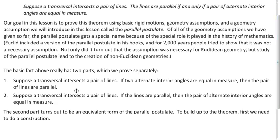There are two parts to this, since it's an if-and-only-if statement — it goes in two directions. One direction says that if the alternate interior angles are congruent, then the lines are parallel. The other direction, which is equivalent to Euclid's fifth postulate, says that if the lines are parallel, then the angles are congruent. We want to prove both using our basic rigid motions.